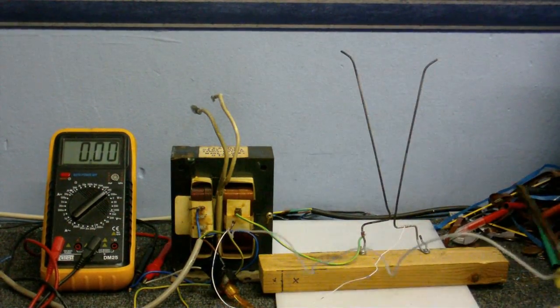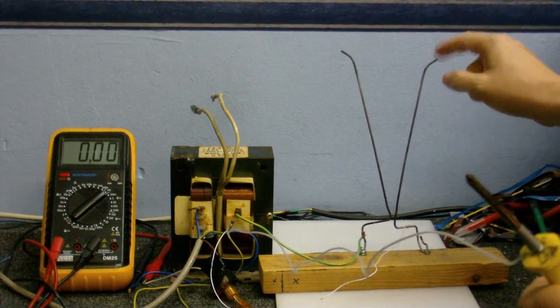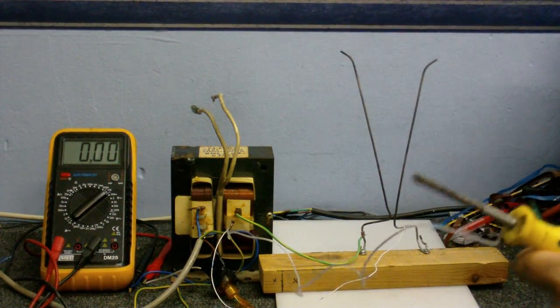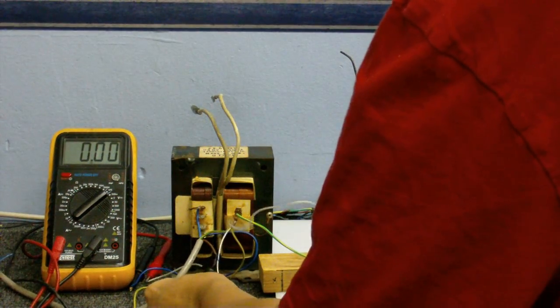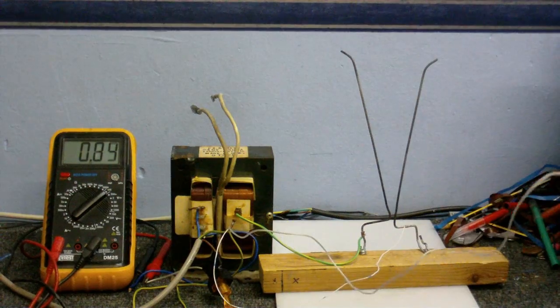Okay, we've got both wires connected now. This one is connected to ground, this one is connected to the high voltage output. Let's see if we can make an arc climb. The transformer is humming.